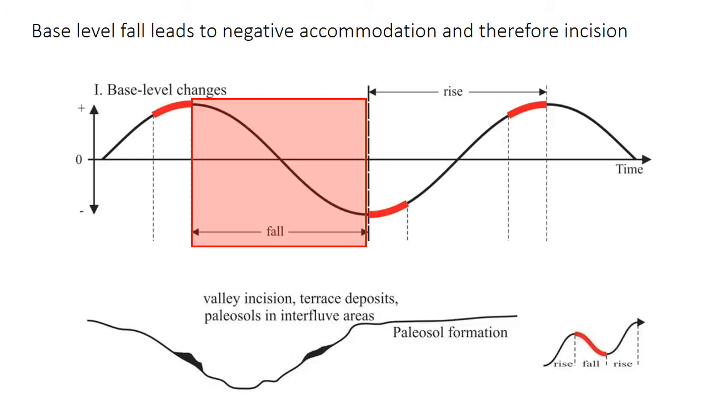As I already mentioned, accommodation space is negative during base level fall, so the river incises instead of depositing sediment. There can certainly be small terrace deposits left behind, the little dark shoulders perching on the edge of this valley here, but generally the sedimentary record of base level fall will be the formation of some deeply eroded valley called an incised valley. Soils, which are called paleosols in the sedimentary rock record, can form in what's called the interfluve, the area between these incising river valleys, but as a good rule of thumb, there's really basically no sediment preserved from the time of base level fall. What that means is that all of the sedimentary deposits that you will observe were deposited during base level rise.